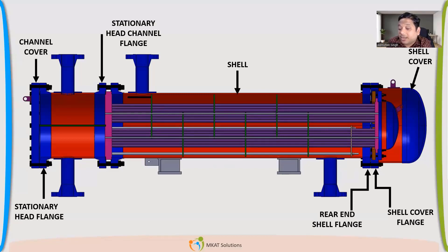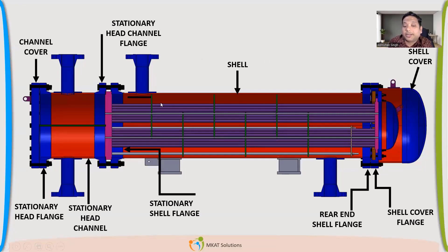Now, rear end shell flange. Stationary head channel. There is stationary shell flange. This is the flange which is at the stationary end. This is called stationary end. The right hand side is called floating side. So floating head. So this is stationary side. This is floating side. Great. So all this terminology floating stationary channel flange, stationary shell flange, stationary tube sheet.